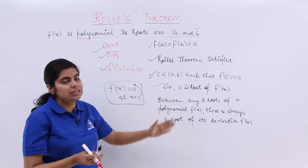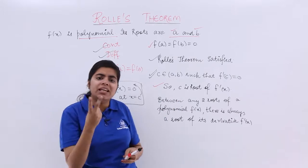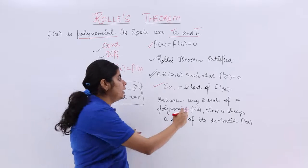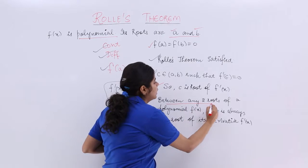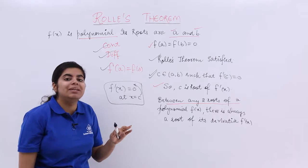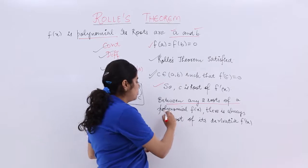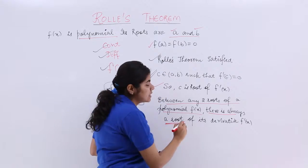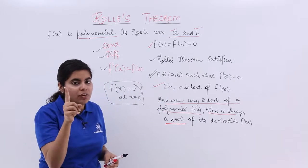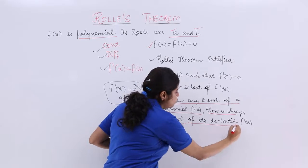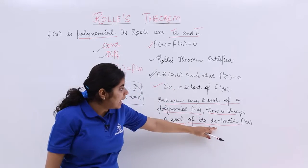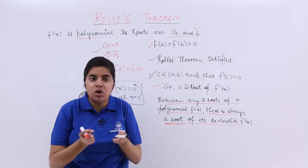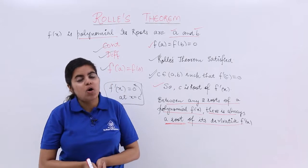In short, after all this, it means that between any two values, say a and b, between any two values which make the function 0, that means between any two roots of a polynomial function, there is always at least one root, and that is the root of its derivative, that is c. So that is the algebraic interpretation of Rolle's theorem.